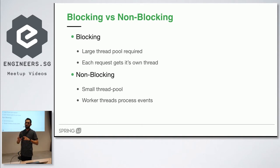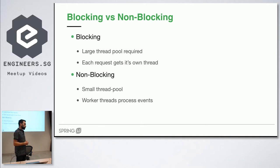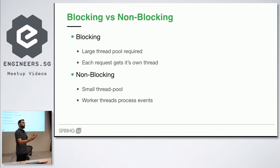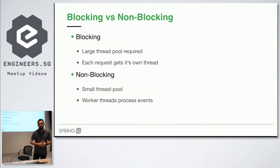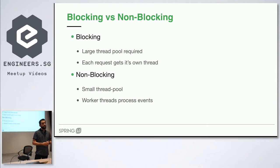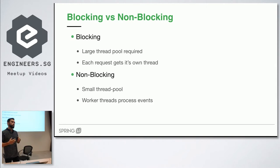We're going to basically move from the blocking kind of operations and models, because we have been using this model for a long time. Usually we had web applications with traditional servlet containers using the servlet APIs, interacting with data stores which were blocking. Every single request got a new thread of execution, so we had a thread pool that we shared. But this is not scaling anymore. If we look at other languages like Node.js, Node.js had the concept of the event loop with non-blocking operations, reusing the same threads for different tasks.